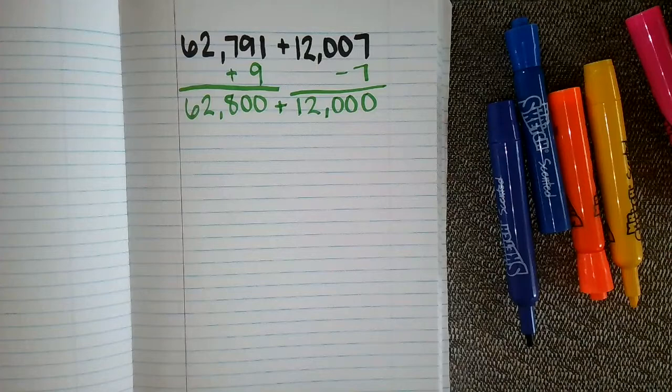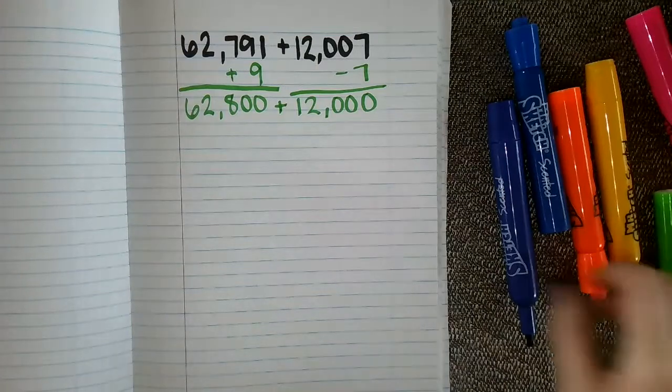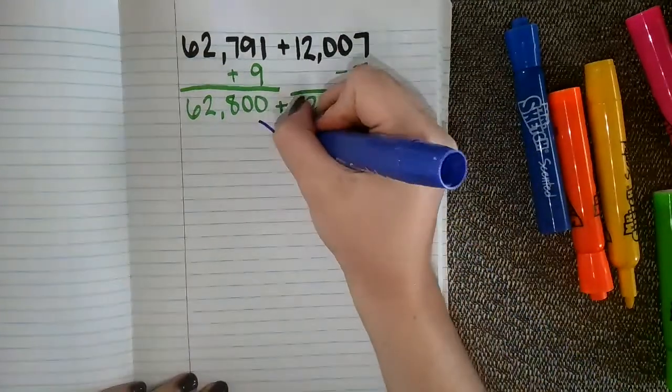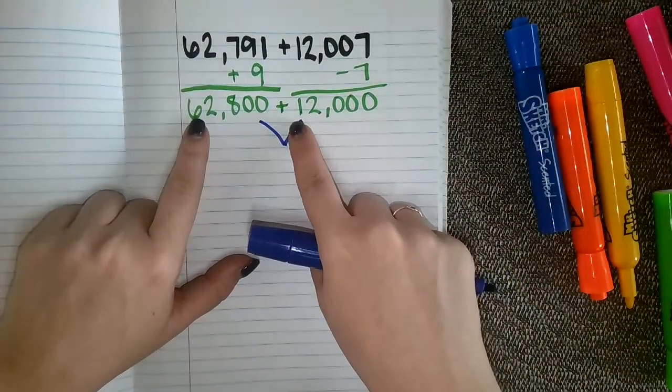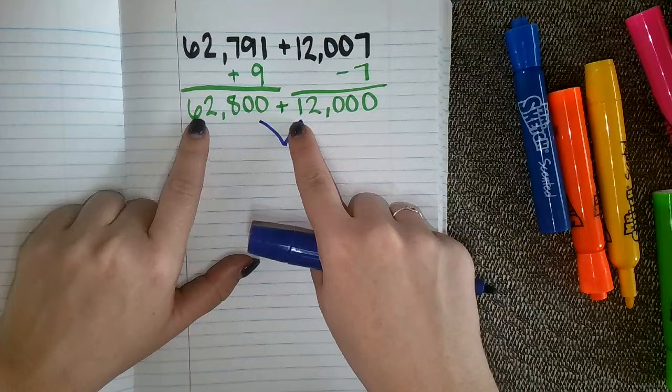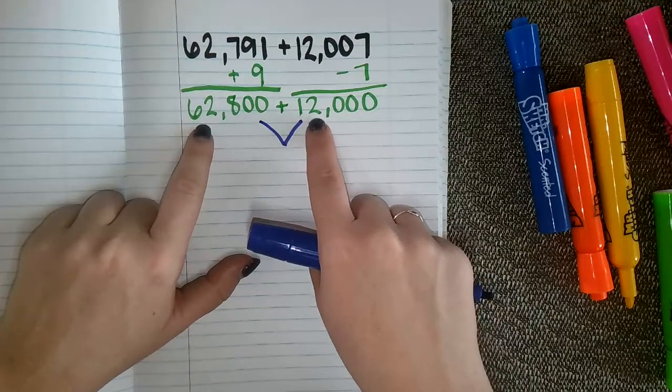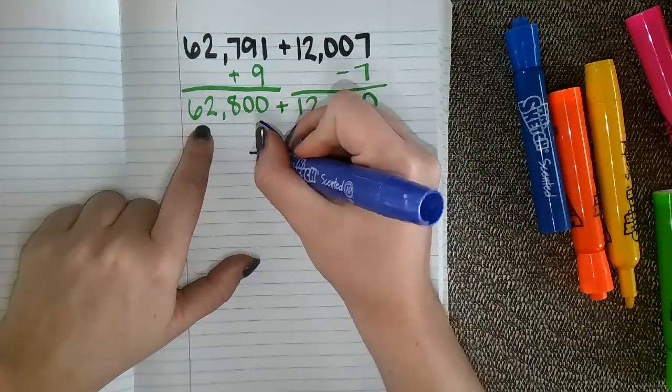All right. So now we are just going to add those together. And I can add these together easily because I see that in my thousands and in my ten thousands place in both of these numbers. I really see that as a 62 plus a 12, which would give me 74,000.